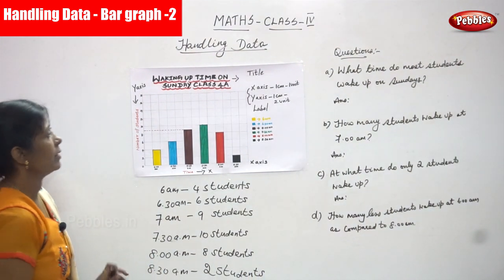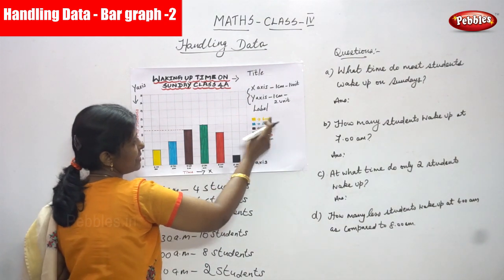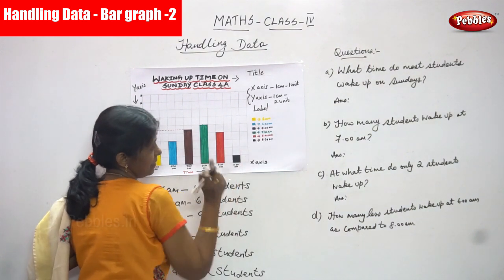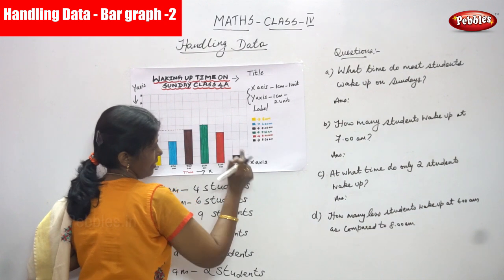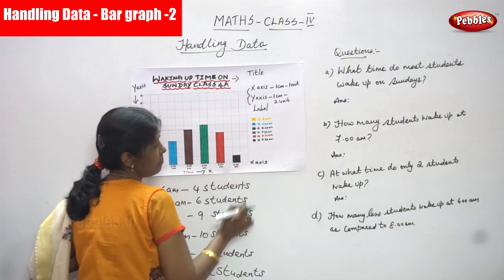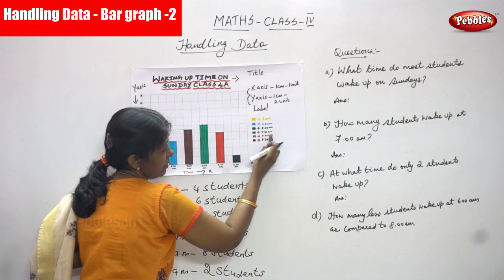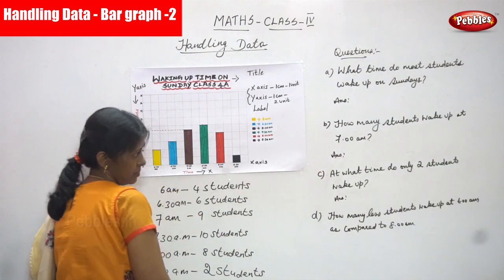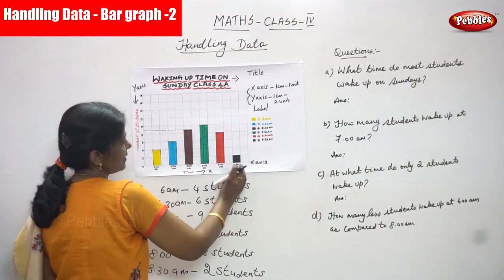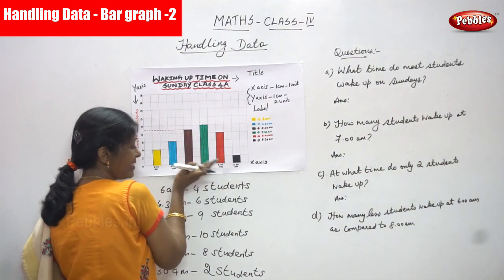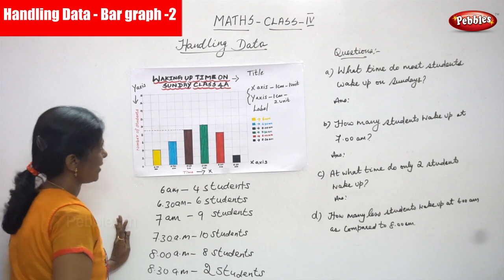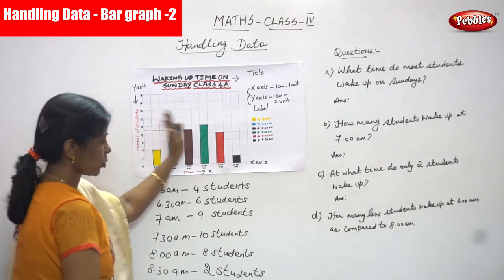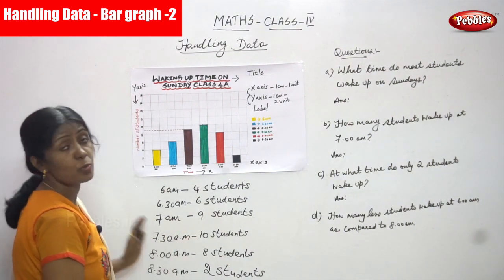So this is very important — what I represent here. Yellow color vertical bar: 6 a.m. Blue color vertical bar: 6:30 a.m. Brown color vertical bar: 7 a.m. Green color vertical bar: 7:30 a.m. Red color vertical bar: 8 a.m. And black color vertical bar: 8:30 a.m. These all come under the time taken on the x-axis, and number of students on the y-axis. The title is "Waking Up Time on Sunday, Class 4A." X-axis and y-axis come under a label. I think you understand the bar graph and all the information very clearly.